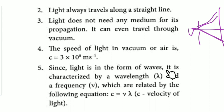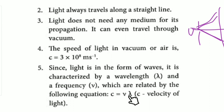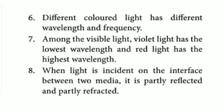Since light is in the form of waves, it is characterized by a wavelength and frequency. The frequency is v, related by the equation c = vλ, where c is speed of light, v is frequency, and λ is wavelength. Frequency is also equal to 1 divided by the time period. This is a very important equation. Different colored light has different wavelengths and frequencies.